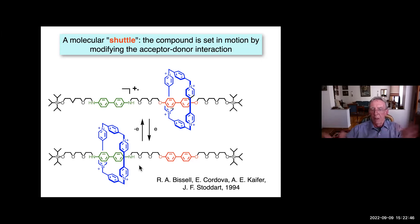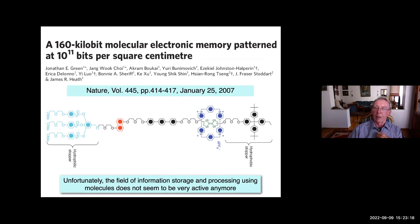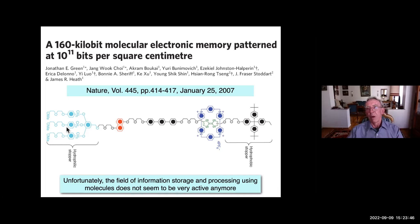From that point, the field started to develop and attract more and more people. One particularly attractive extension proposed many years later by Stoddart was taking a very long rotaxane acting as a shuttle — moving the blue ring between stations — and attaching both ends to nano-electrodes. They could show that you can generate a system able to store and process information based on molecules. This is, as far as I know, the first molecular system towards molecular computing or at least molecular storage and processing of information.